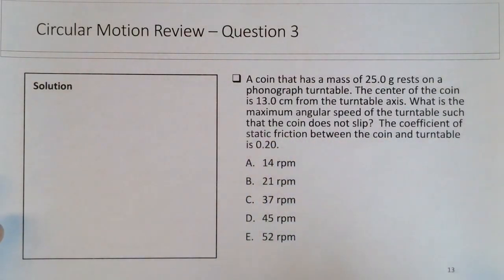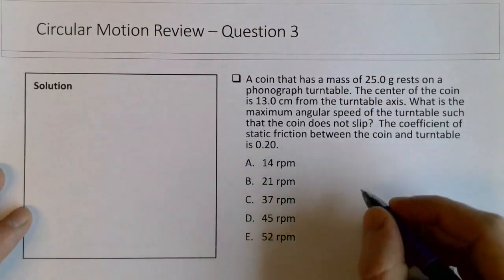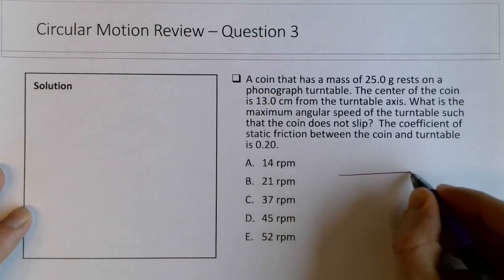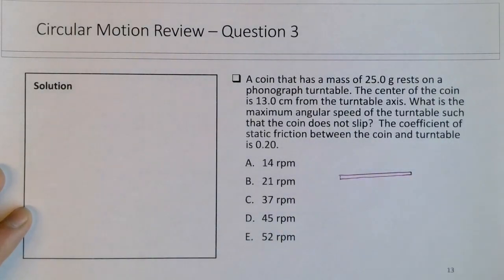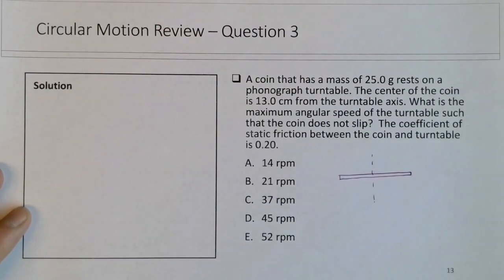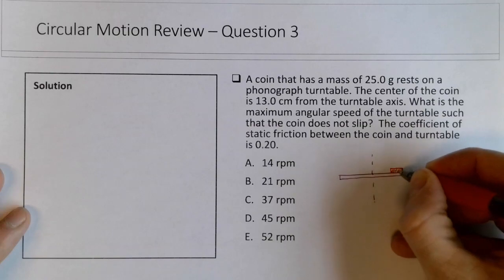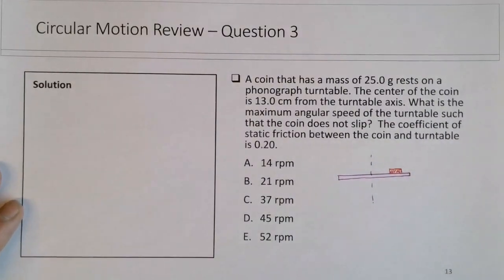So maybe it works well to use a space over here so we can just sketch. This is the record player, and this maybe is its rotating axis, so sort of a side angle view, and then we've got this coin sitting on the table.